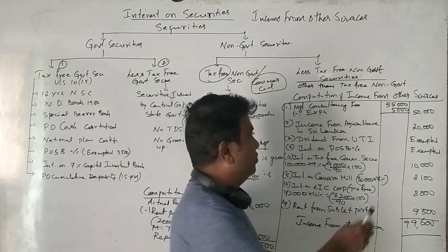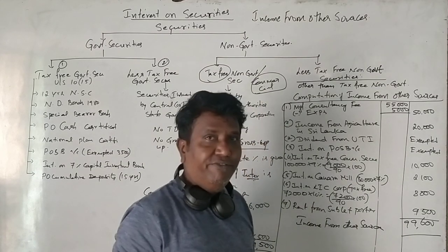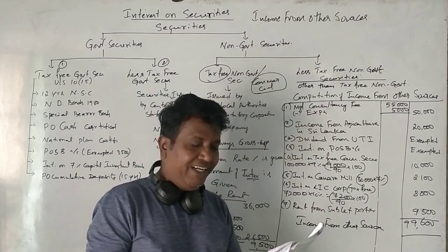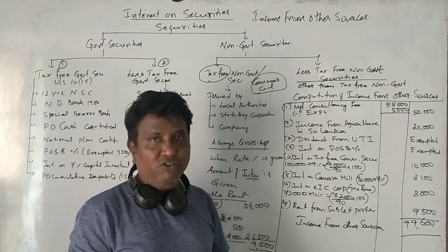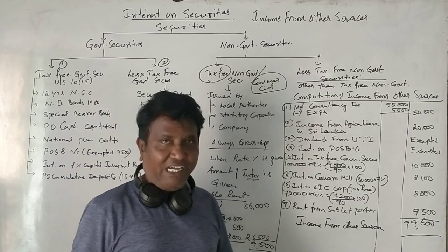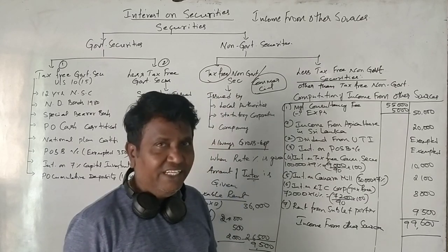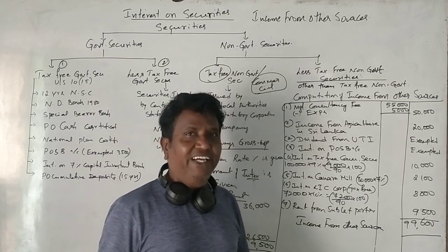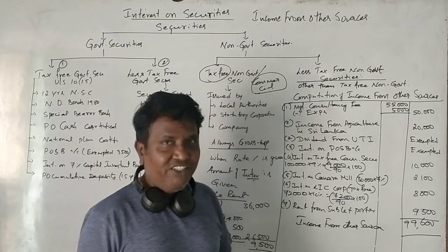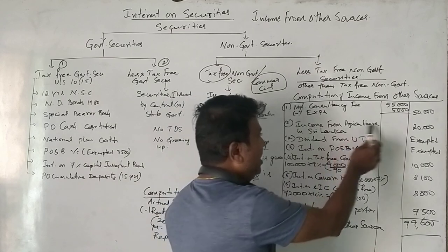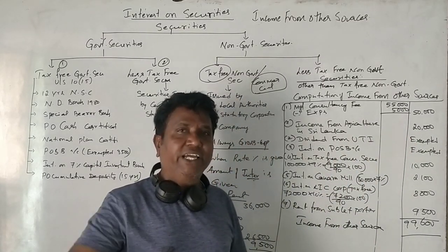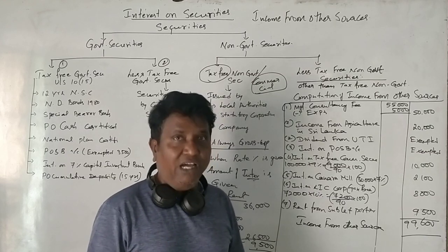Income from agriculture in Sri Lanka is ₹20,000. Agricultural income from a foreign country like Sri Lanka is fully taxable. However, agricultural income in India is exempt — agricultural income in India is fully exempted.